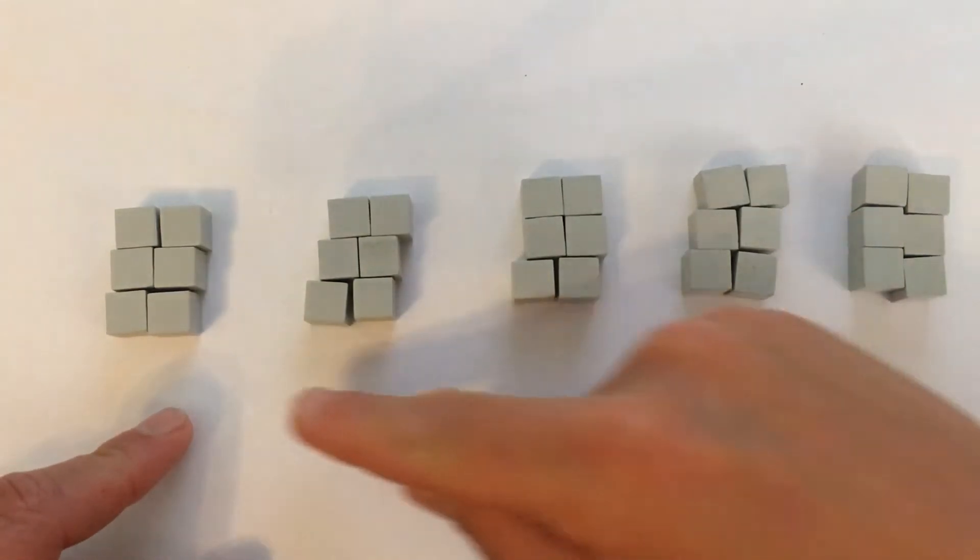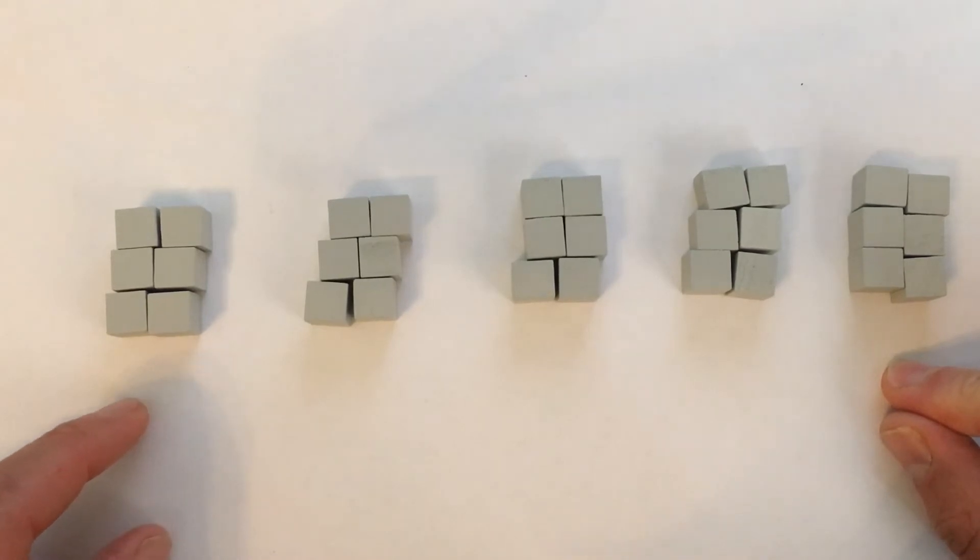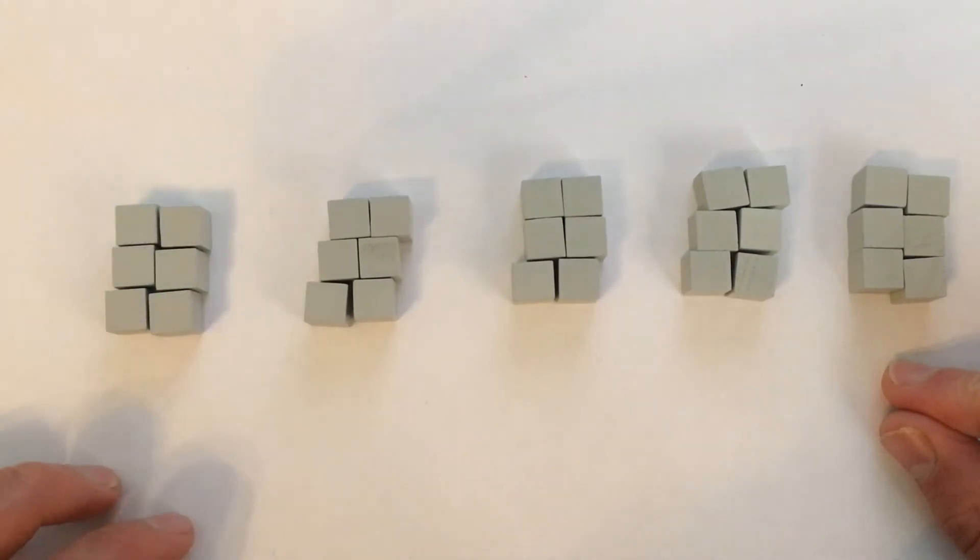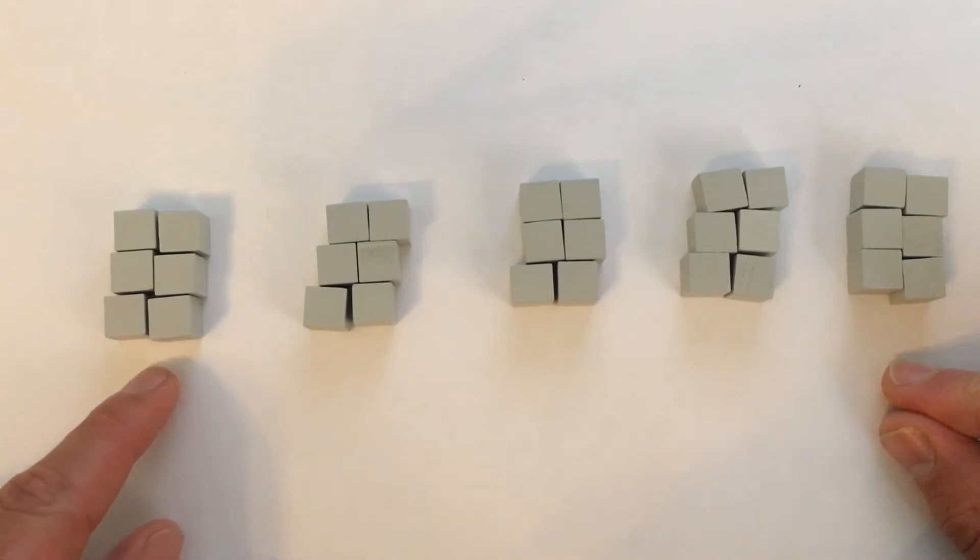I've used all 30 blocks and split them into 5 equal groups. So let's look at how many is in each group, 1, 2, 3, 4, 5, 6. So 1 fifth of 30 is 6.